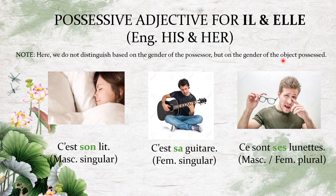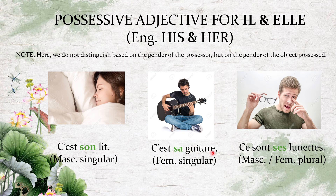For 'il' and 'elle,' the three forms are son, sa, and ses. 'C'est son lit' — this is his bed or her bed — 'son' is used because 'lit' is masculine singular, not based on whose bed it is. 'C'est sa guitare' — this is his guitar — 'sa' because 'guitare' is feminine singular. From the picture you can see it is his guitar, but 'sa' applies equally to 'her guitar.' The form is determined by the gender of the object, not the possessor.